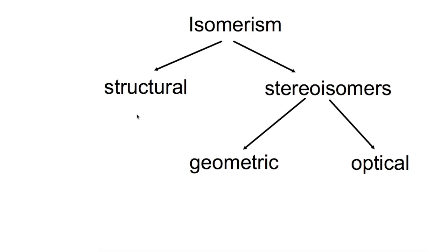First of all we're going to have a look at isomerism. It can be split into two different types: structural isomerism and stereoisomerism. Structural isomerism is where atoms are joined in a different order, and this is the type of isomers that you've been used to looking at.